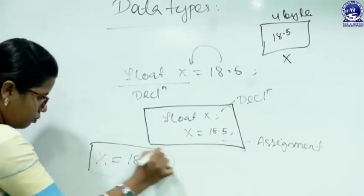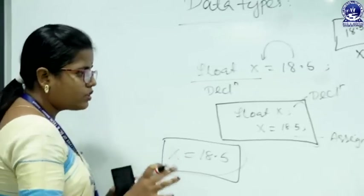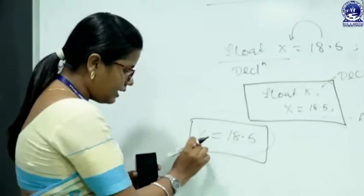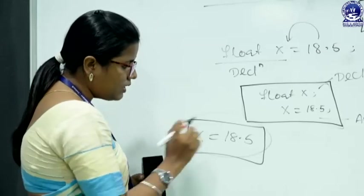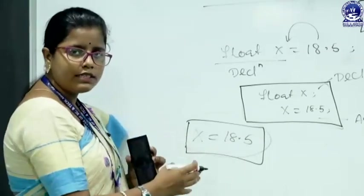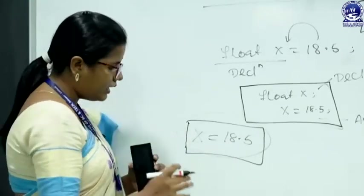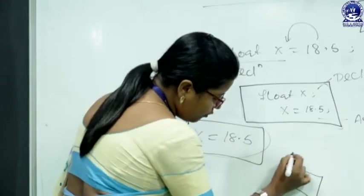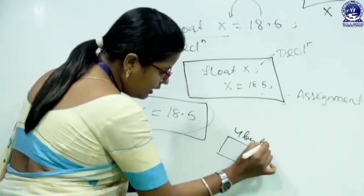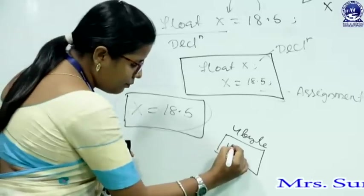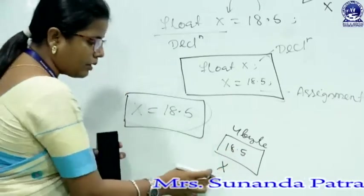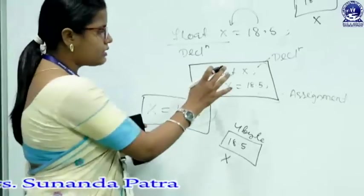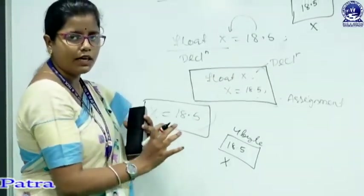But in Python programming language we do not need to declare a variable — we simply write x equals to 18.5. While interpreting this line, the interpreter will create a memory location of 4 bytes and at the same time 18.5 will be assigned to variable x. So this is the basic difference between C language and Python programming language.